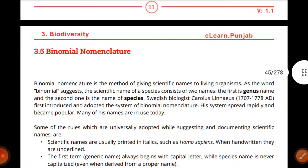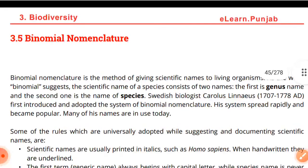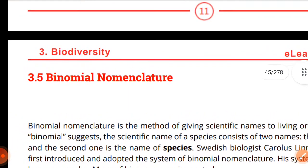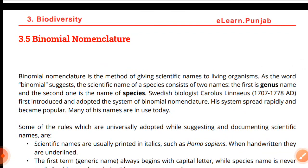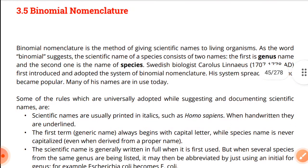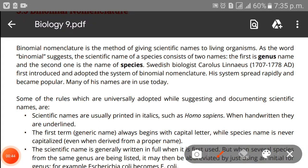Assalamu alaikum, my dear students, and a very warm welcome to all of you. Welcome back to our YouTube channel. As you all know, we have started chapter number three, and today we have to study topic 3.5, which is binomial nomenclature. By the name we can suggest what the topic is going to be about — how species are named in biology. Just be attentive, and if you have any questions you can ask in the comment section without any hesitation.